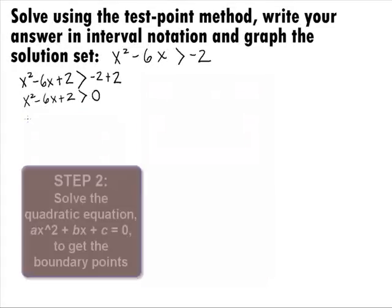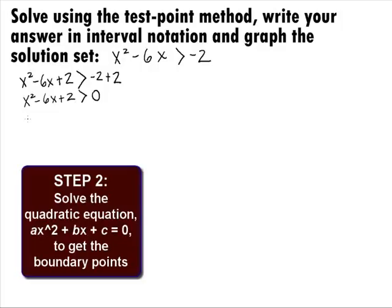In Step 2, we want to set up what we found in Step 1 as a quadratic equation and solve it to get the boundary points. The boundary points will mark off where the quadratic expression is equal to 0 — this is like the crossover point since 0 is neither positive nor negative. Our equation will be x squared minus 6x plus 2 equals 0.